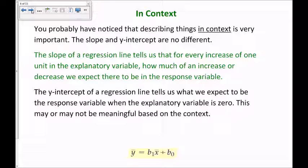You've probably noticed that describing things in context is very important in this class, and the slope and the y-intercept are no different. The slope tends to be more important and comes up more frequently than the y-intercept. The slope of a regression line tells us that for every increase of one unit in the explanatory variable, how much of an increase or decrease we expect there to be in the response variable. The y-intercept tells us what we expect the response variable to be when the explanatory variable is 0 — this may or may not be meaningful depending on the context.